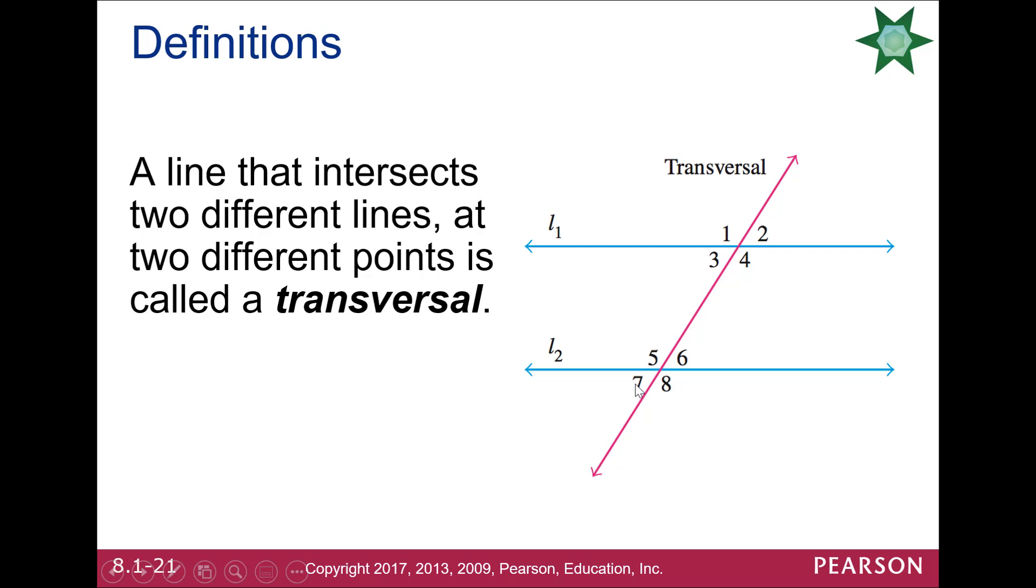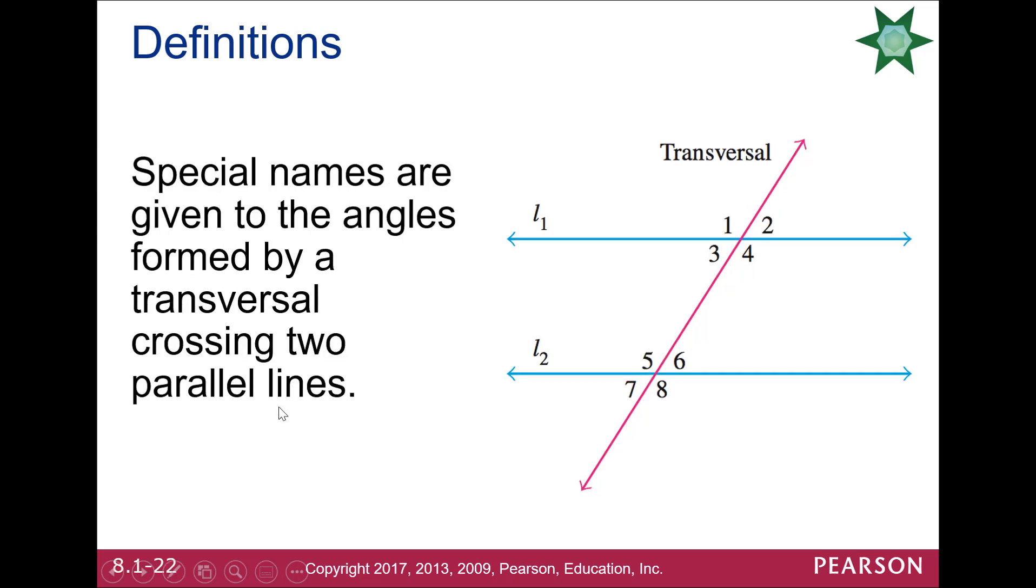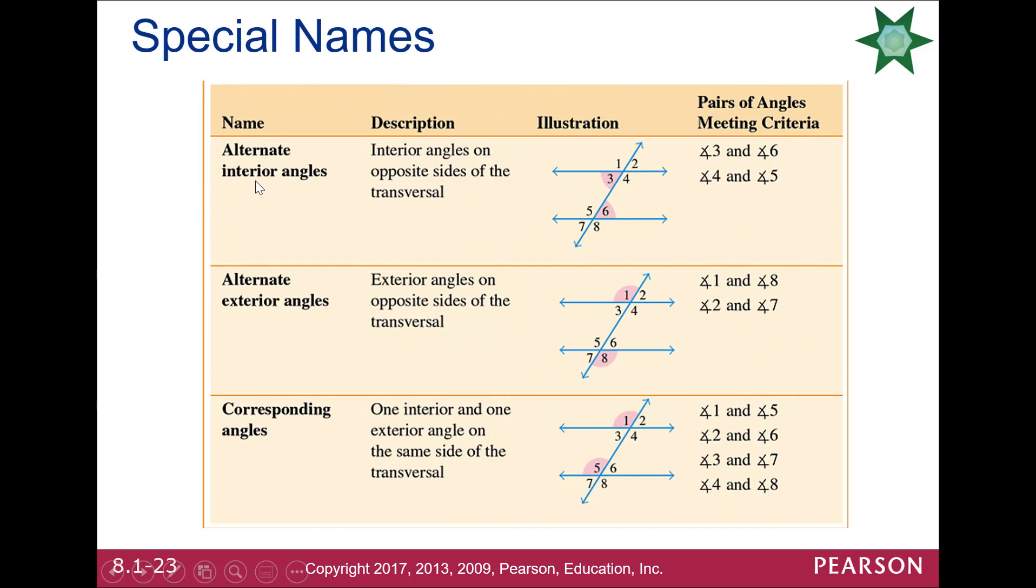You also have other ones that are going to be equivalent angles here. You're going to have what we call alternate interior angles, 3 and 6. They're inside the parallel lines on opposite sides, or 4 and 5. Or alternate exterior, 1 and 8, 2 and 7. Or corresponding, 1 in, 1 out of the parallel lines on the same side, 1, 5, 3, 7, 2, 6, 4, 8. Those are going to be equal.